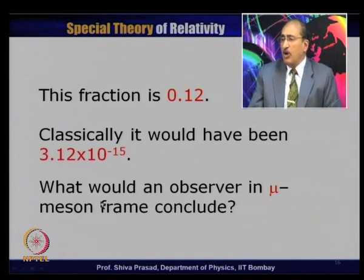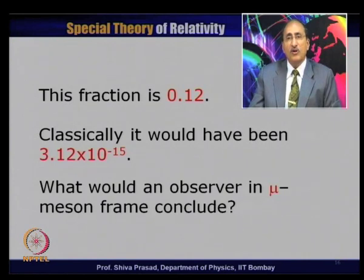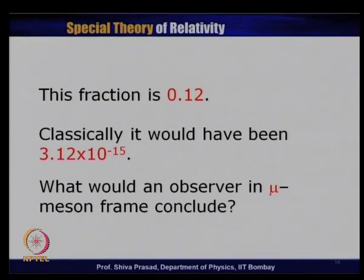A useful question: what would an observer in the mu meson frame conclude? From that perspective, the distance between Earth and the upper atmosphere appears contracted. The mu meson has not actually travelled 20 kilometres but a much smaller distance — that is why it has not decayed. This is the length contraction complement to the time dilation explanation.